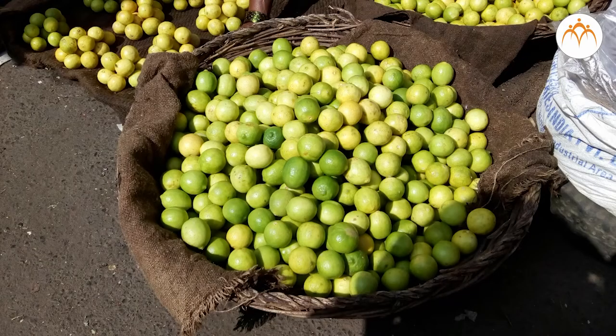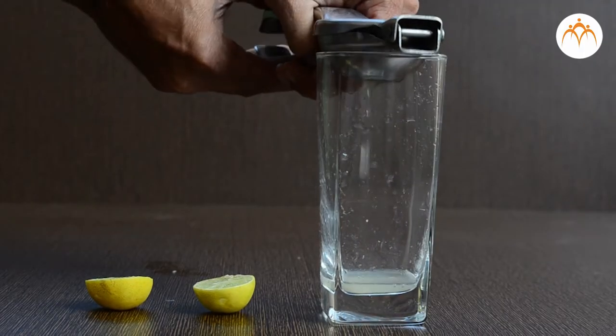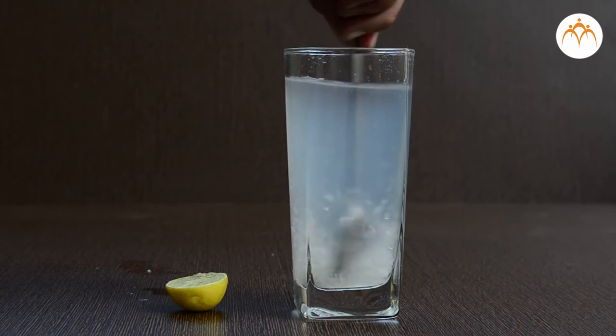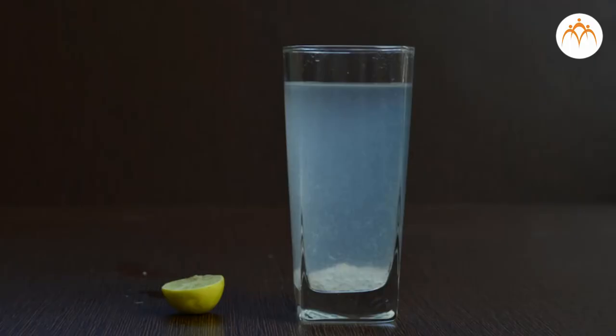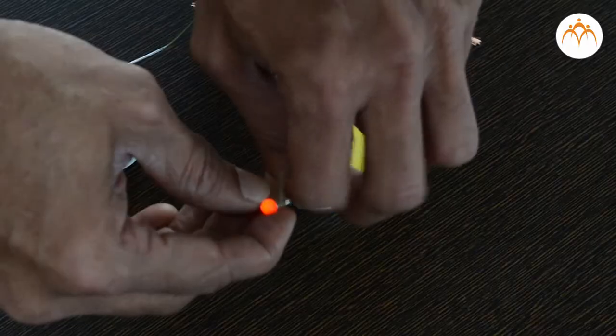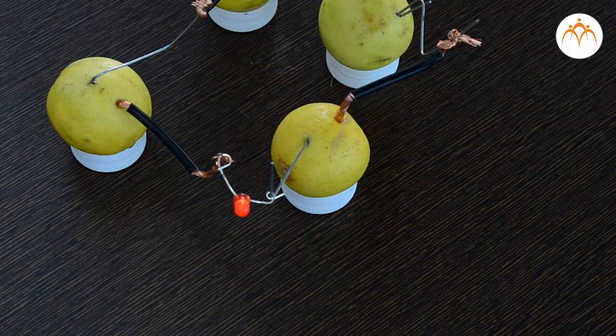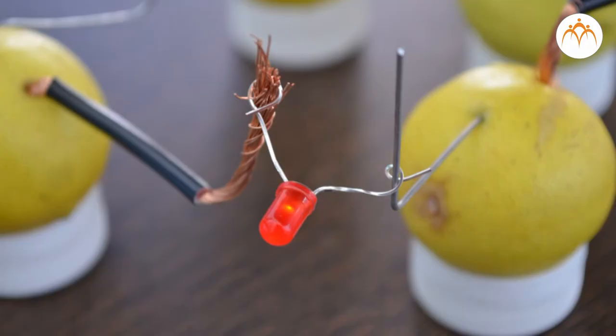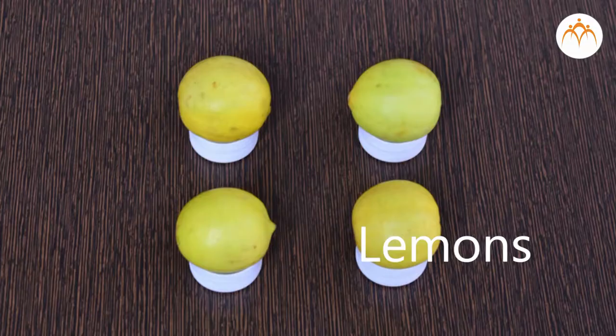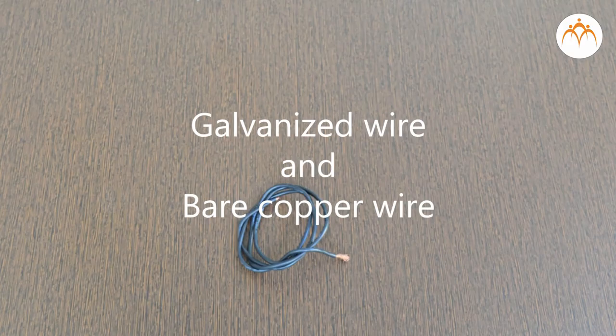What are these lemons good for apart from their use in cooking? As you all know, lemon juice is nothing but one form of acid. We can use it to our advantage and construct a working electrical cell. A simple cell can be constructed with the help of four lemons, galvanized wire, and bare copper wire.